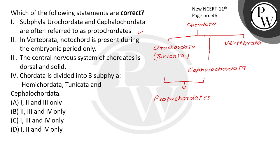If you talk about Urochordata, the notochord is present throughout life. Now, Statement II says: in Vertebrata, notochord is present during the embryonic period only. This is correct — in Vertebrata, the notochord is present only during the embryonic period.